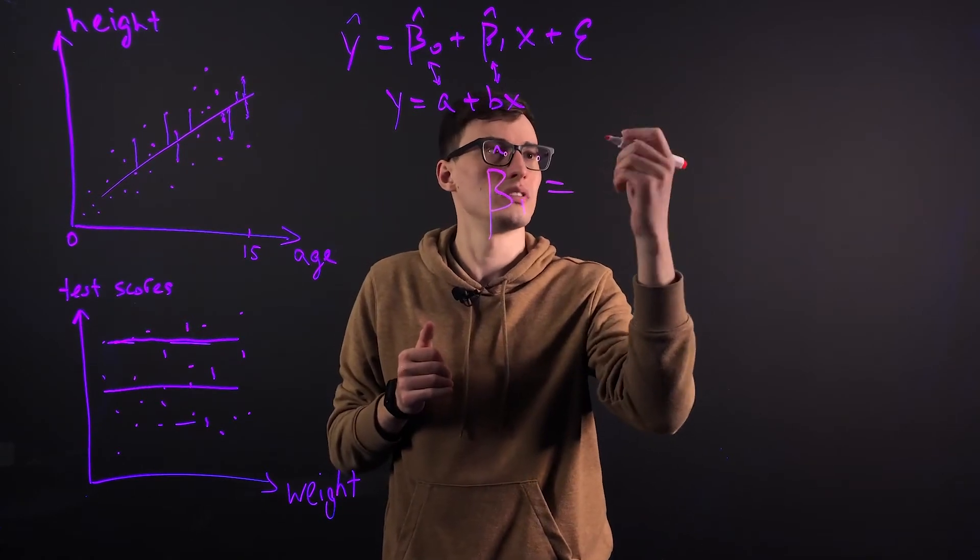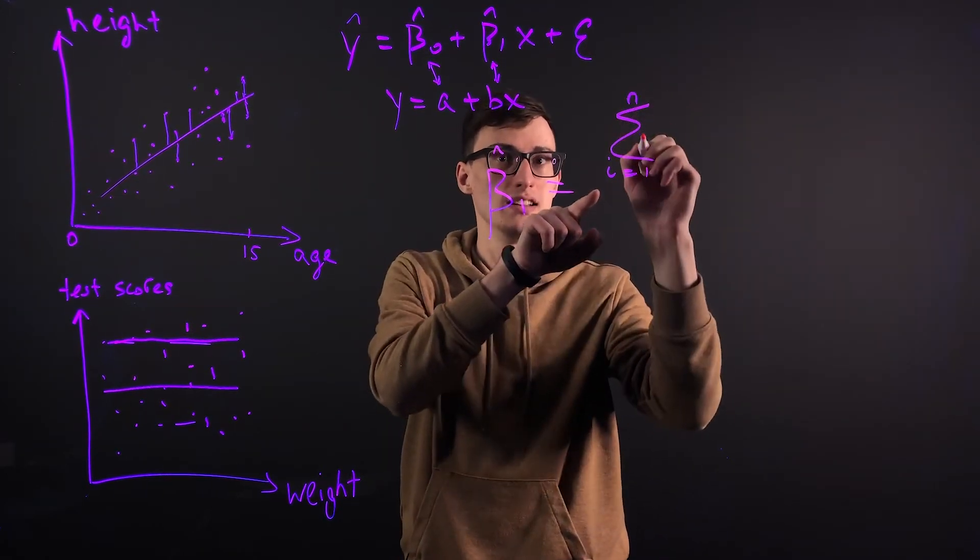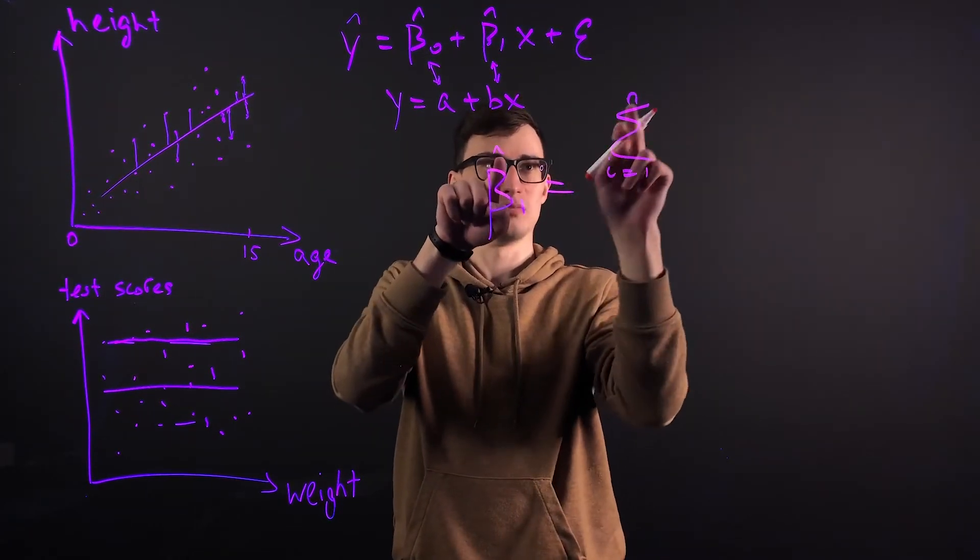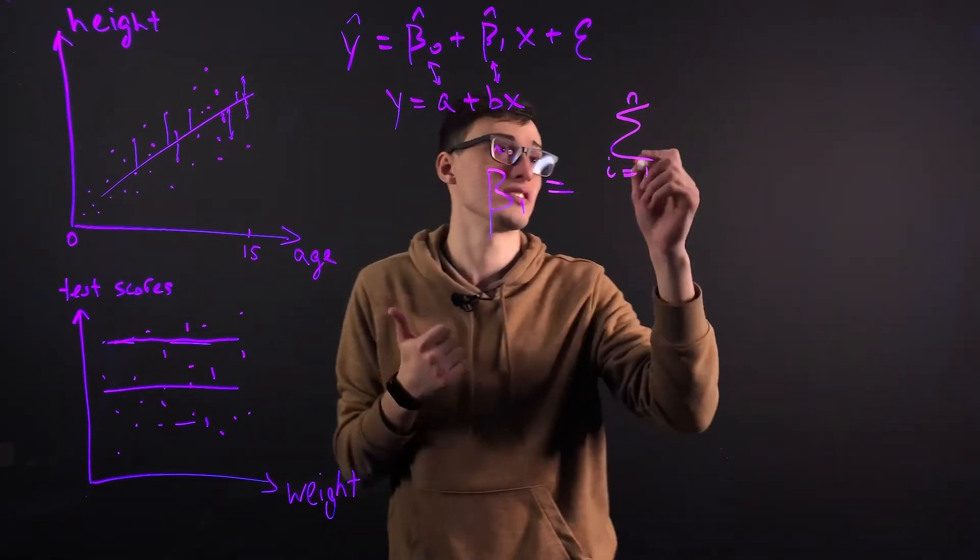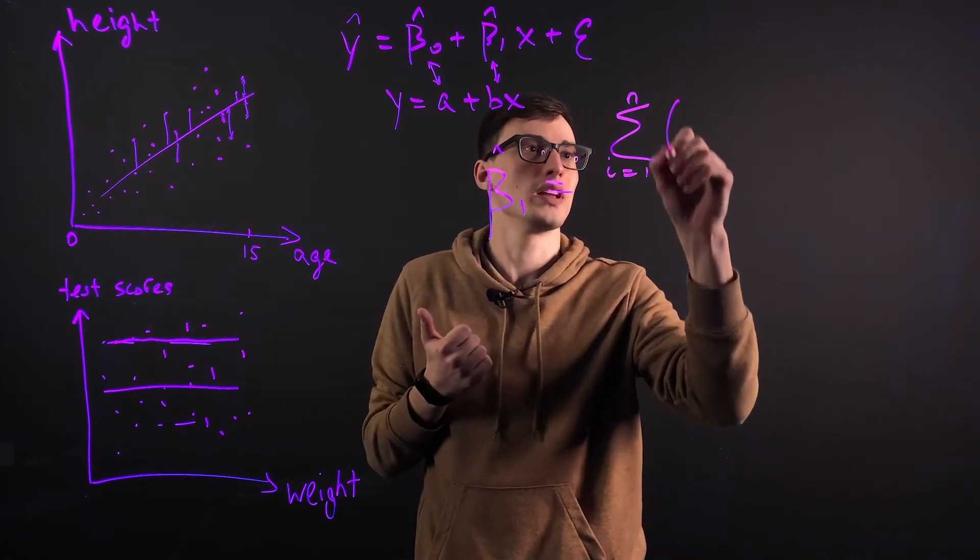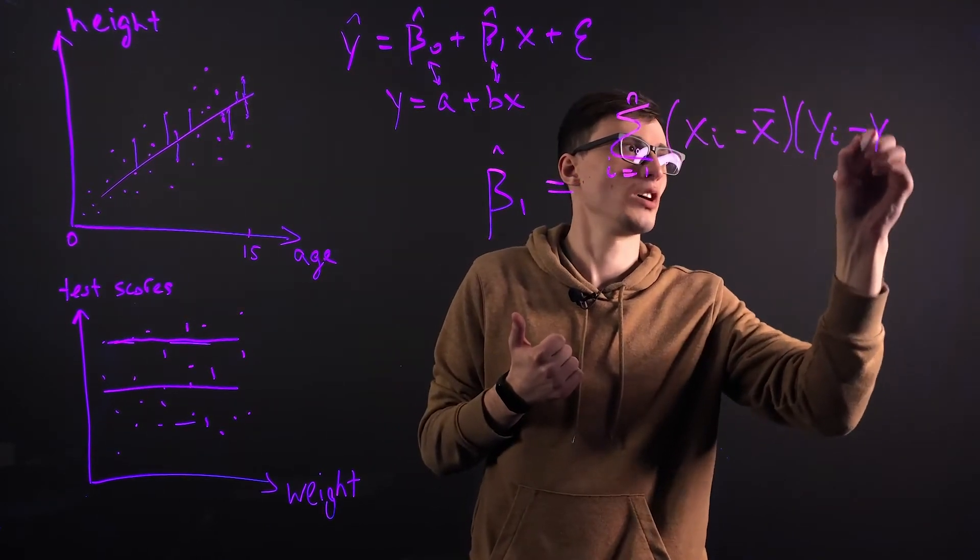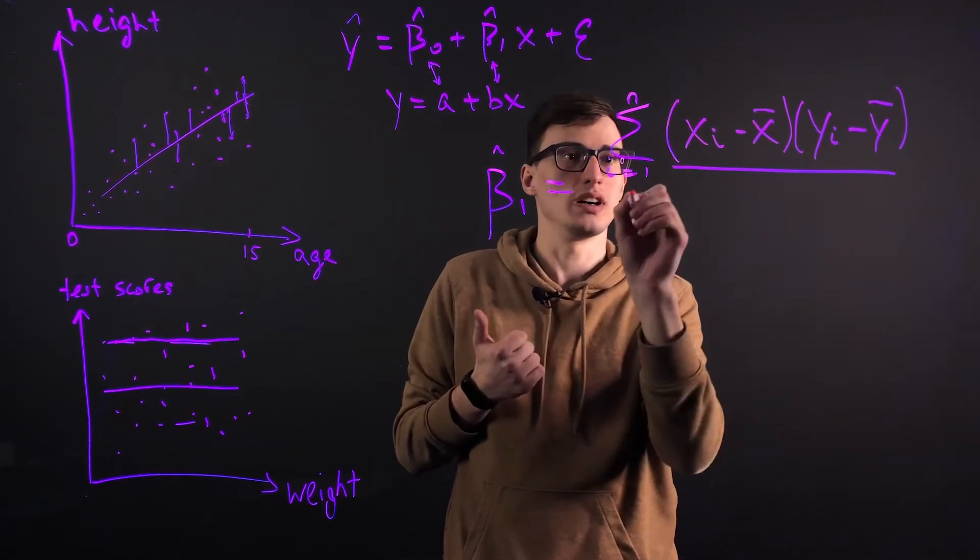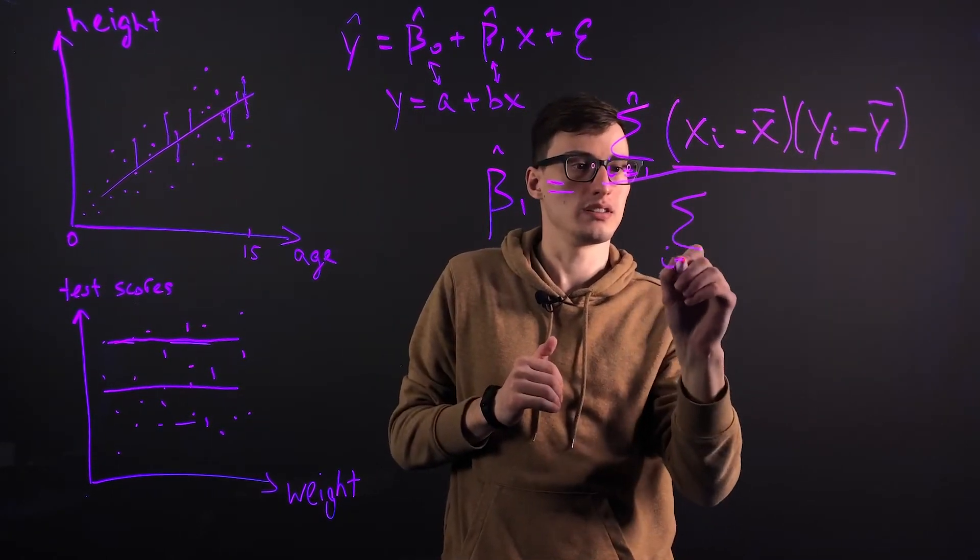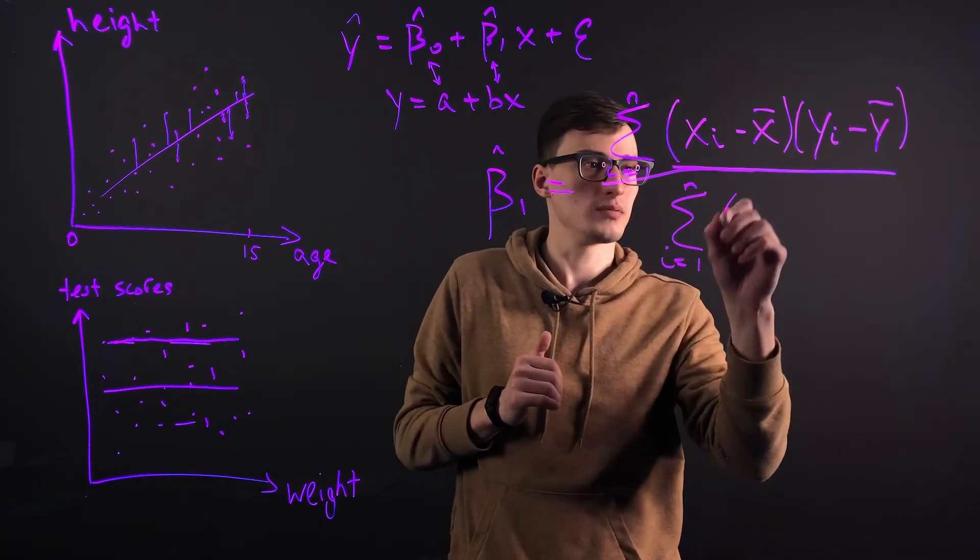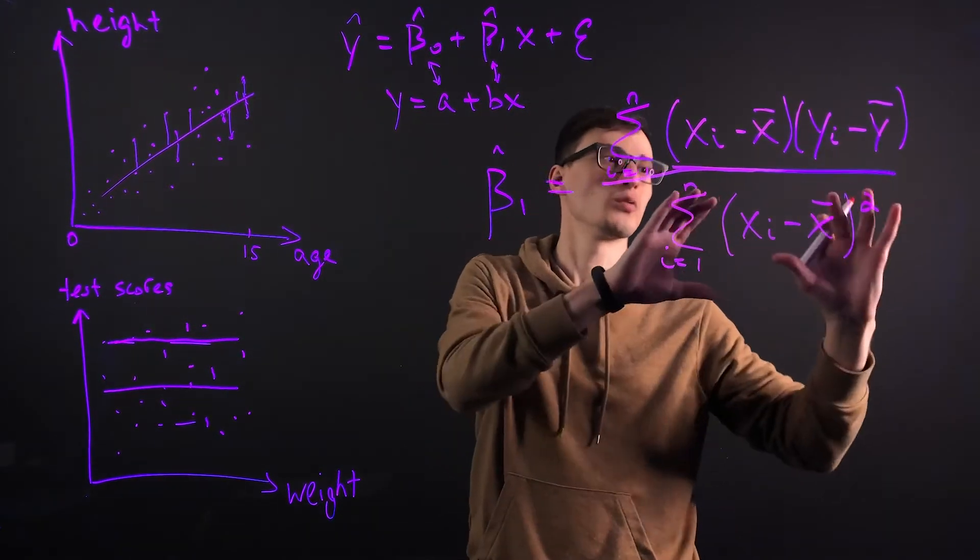It's the sum of all the data points starting with 1 to n. Now this isn't the same symbol, because this confused me at first. This is like a little pointy symbol and this is n, meaning the number of observations that we have. And it's x ith minus x bar times y ith minus y bar divided by the sum of all the observations x ith minus x bar squared. That's where the sum of least squares comes in.